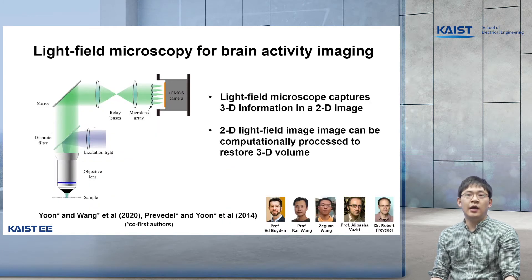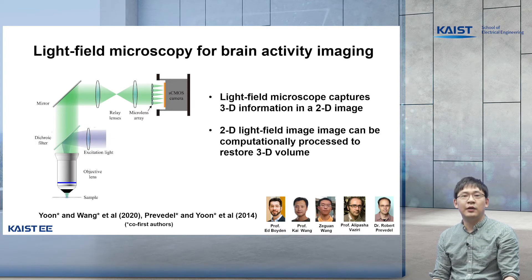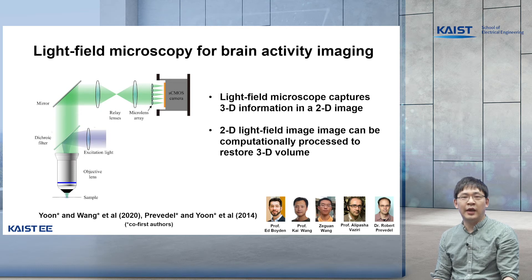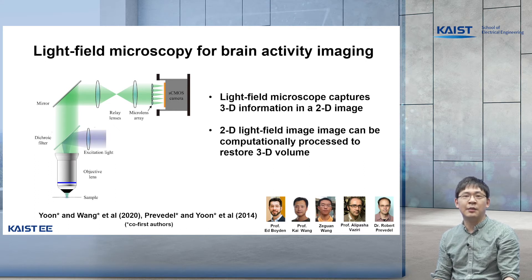Let me go into a little bit more detail about imaging brain activity. Light field microscopy is a technique for capturing 3D information in a 2D image, which can be computationally processed to restore the 3D volume. We decided to apply and advance this technique for capturing brain activity, because this approach allows us to perform 3D imaging at the speed of the camera, which can easily go beyond 50Hz, whereas other competing methods could only go about a few hertz.